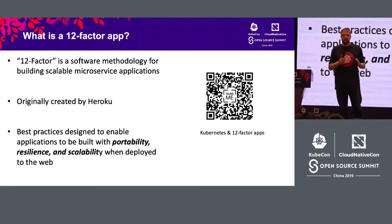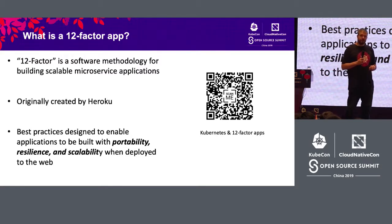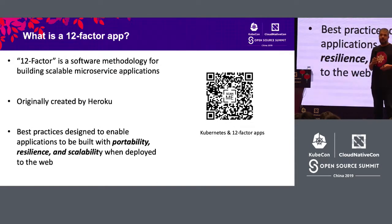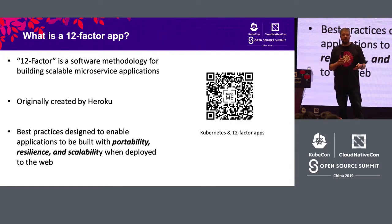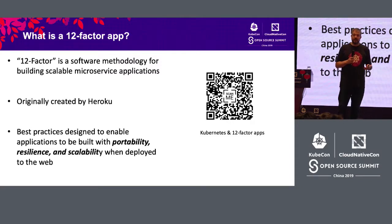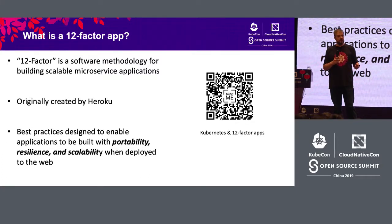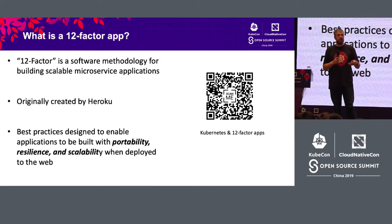How many of you are already familiar with this notion of a 12-factor application? 12-factor is a methodology, and it says there are 12 specific practices that you should follow when you're building scalable microservices. It just gives you a way of defining step-by-step best practices as you create applications. Kubernetes has really taken a lot of these factors into account in designing the Kubernetes API and things like deployments and stateful sets. We talked about this at KubeCon Barcelona — you can watch that recorded session where we explain the relationship of 12-factor applications to Kubernetes.